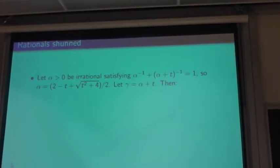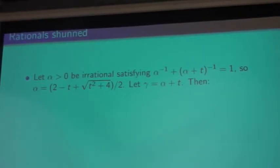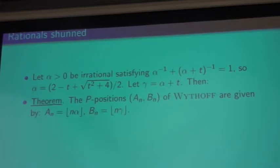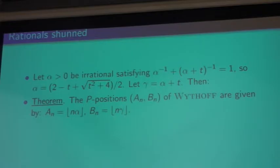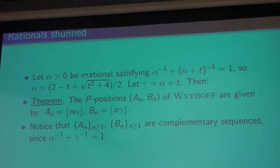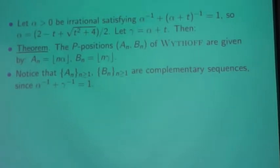So, here we see, again, that rationals are fun. So, we start with some irrationals, alpha and beta. Alpha satisfying this equation: 1/alpha + 1/(alpha + t) = 1. So, that means that alpha has this expression here. And let gamma be alpha plus t. Then, it turns out that the P positions that were before defined recursively, they have also an explicit expression, namely, given here by the integral part of n*alpha and integral part of n*gamma. And that provides a polytime strategy.